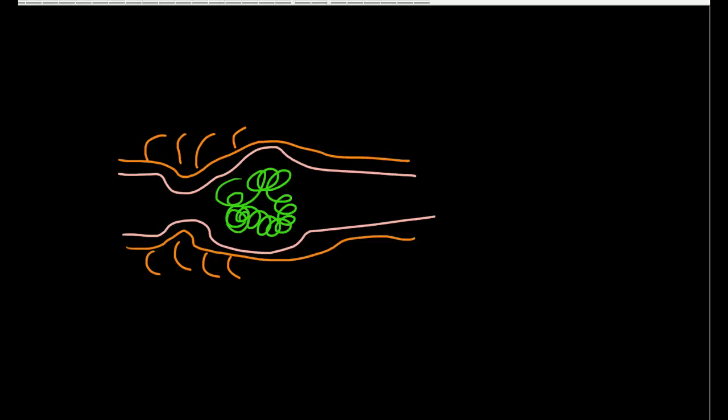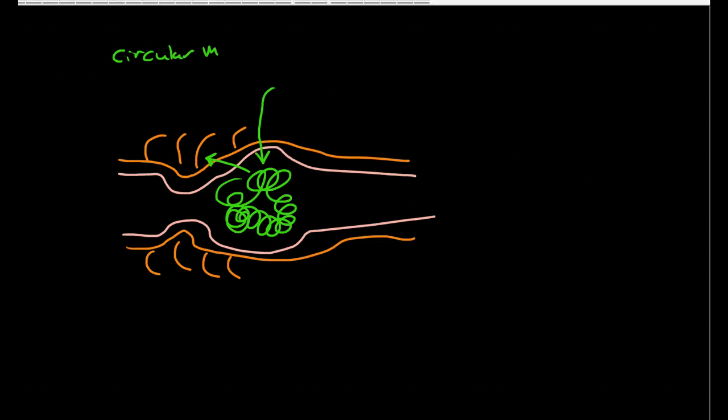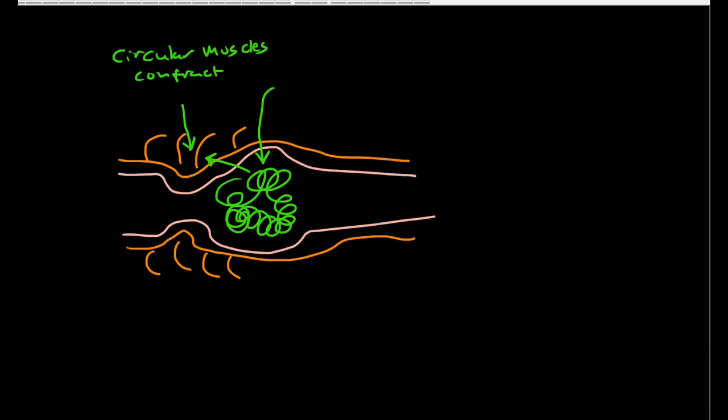Remember the bolus of food is causing stretch. What does the stretch do? The stretch causes muscles here, the circular muscles, to contract right on top of the bolus. At the same time the longitudinal muscles contract as well, and that shortens up the tube.